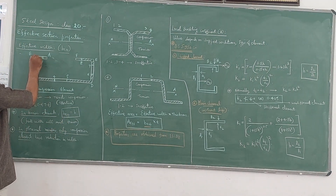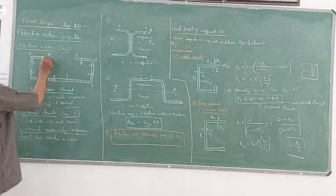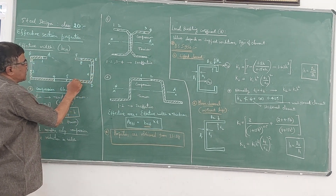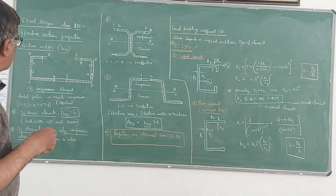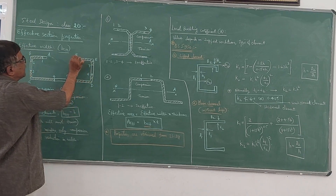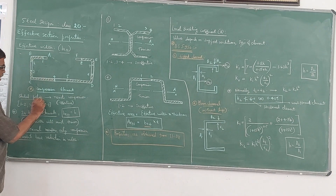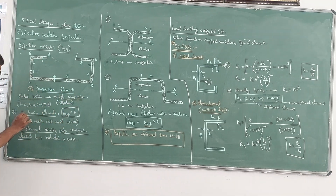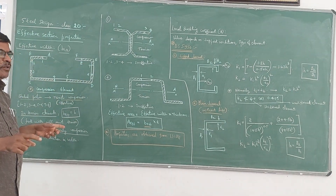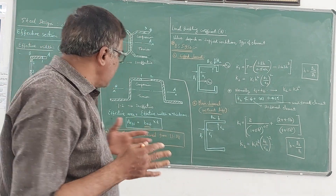The shaded areas, labeled 1 through 8, are the effective widths in this compressive element. The other portions, A1 through F, are not effective in carrying the compressive load. The shaded portion resists the compression effectively. So if you take the entire width as B, then B effective is the shaded width. We can calculate B effective using formulae which will be explained later.